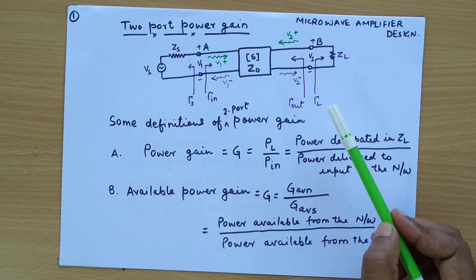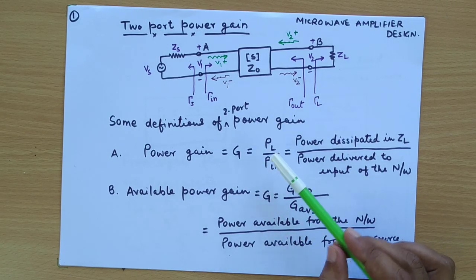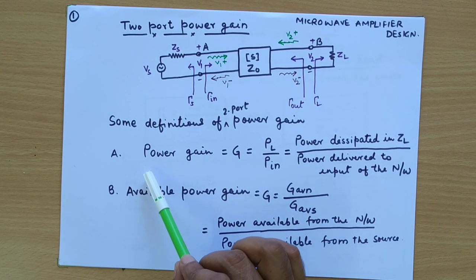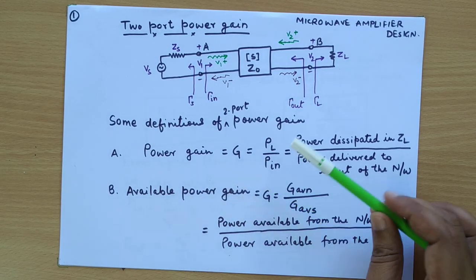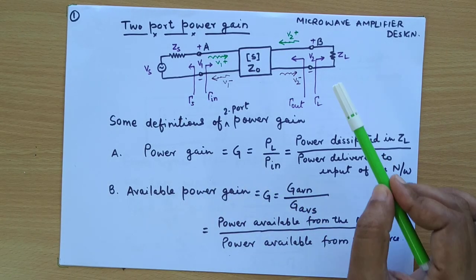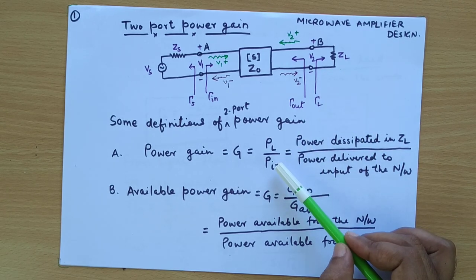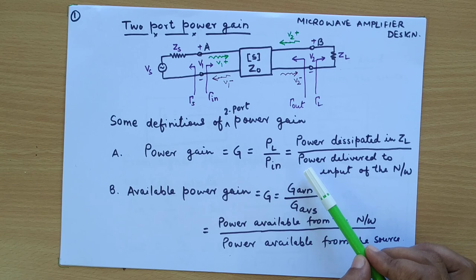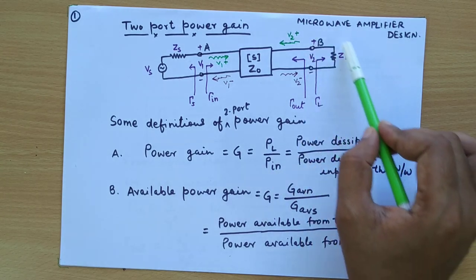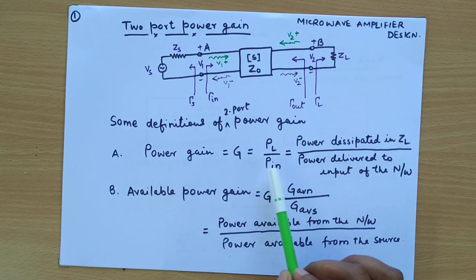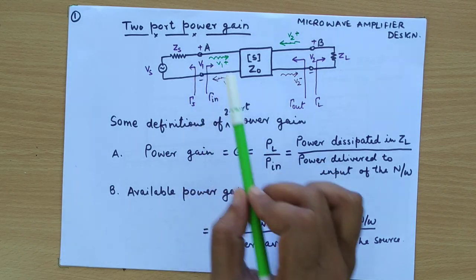Now let us define the different types of power gain. The first one is simple power gain, which is defined as the power delivered to the load divided by the power delivered to the input of the network. So it is the ratio of power delivered or dissipated to the load and the power input from the network.